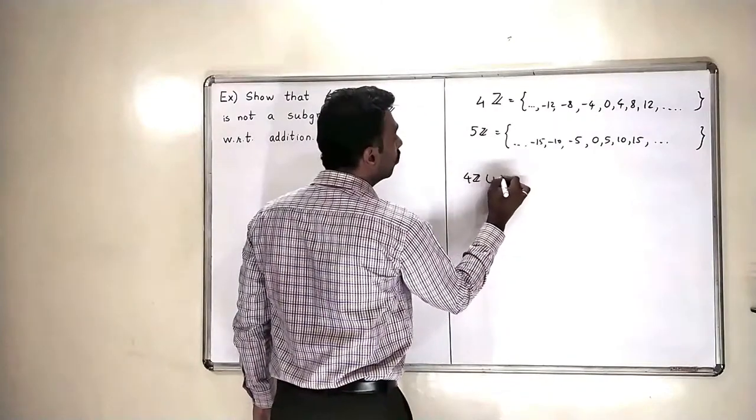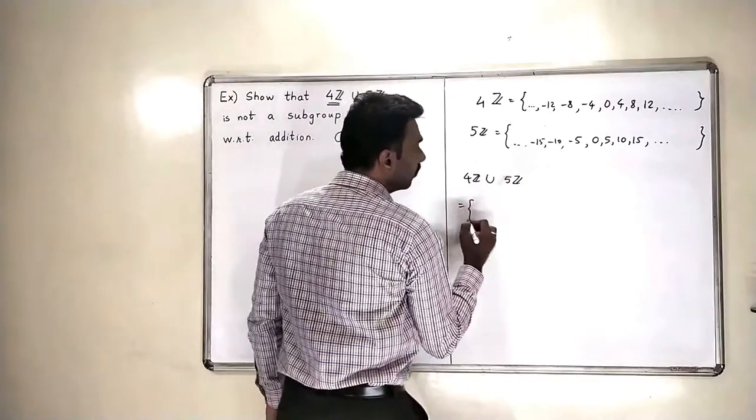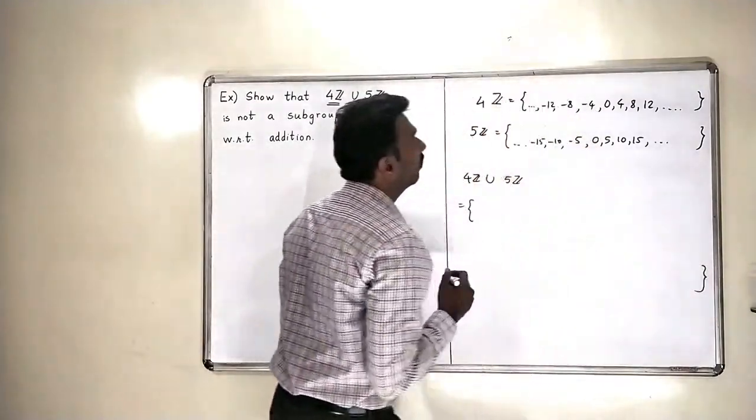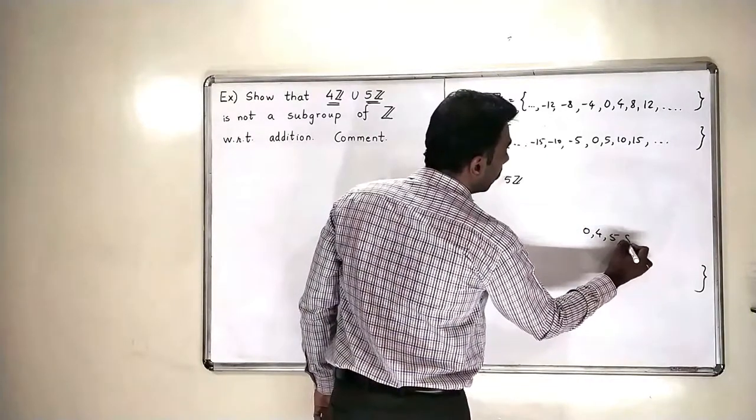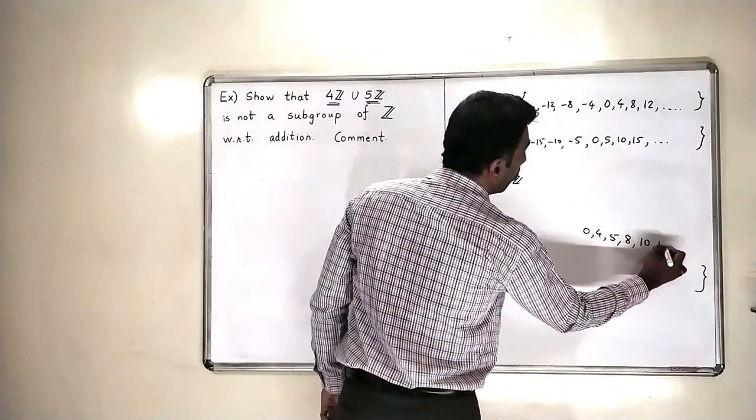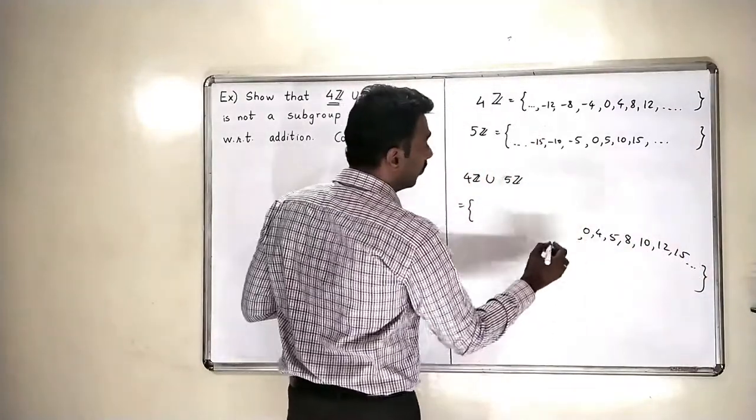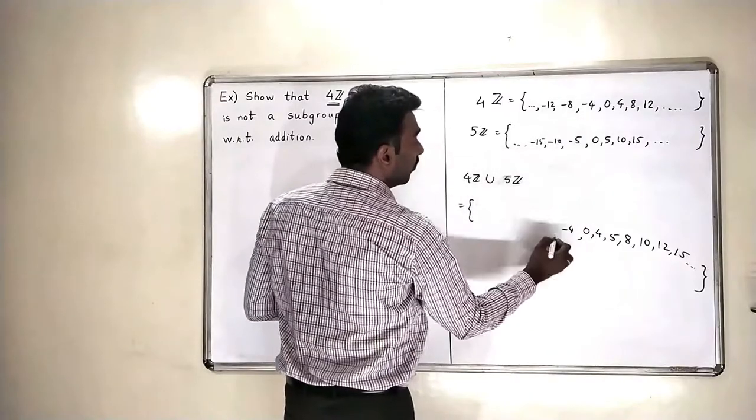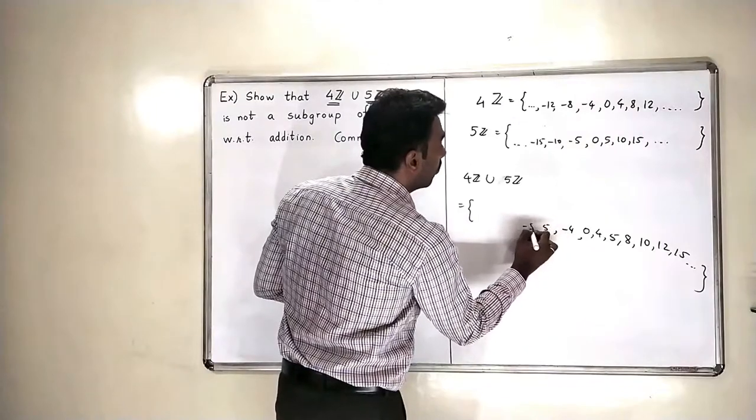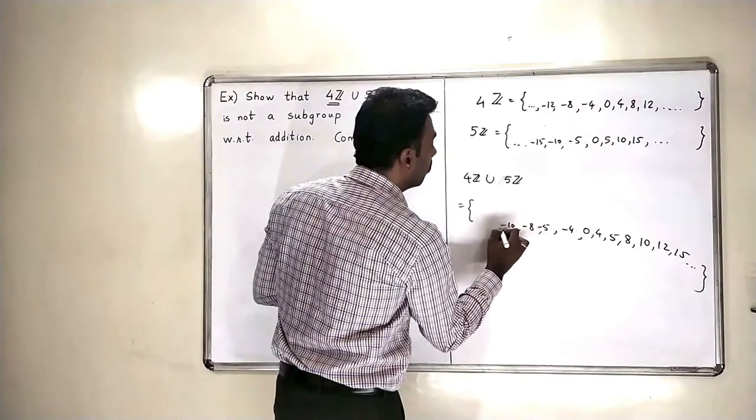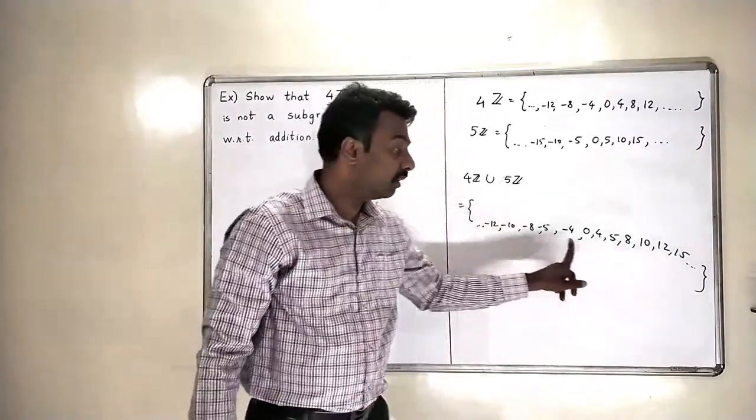Now I will take their union. So when I take 4Z union 5Z, I will put all the elements in one single set. And what is that set? So 0 will be there, 4 will be there, 5 will be there, 8 is there, 10 is there, 12, 15 and so on. If I look at the negative numbers, I will get minus 4 is there. I am putting all the numbers together in one set. Minus 4, minus 5, minus 8, minus 10 and minus 12 and so on.